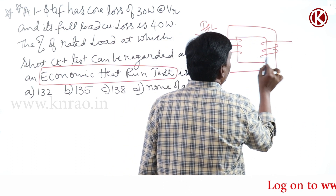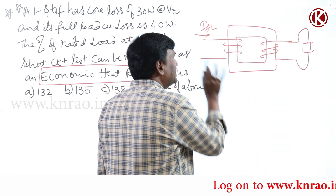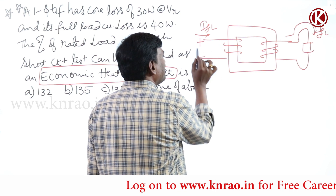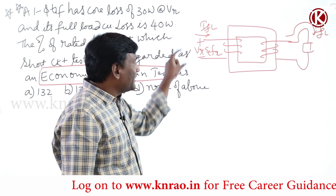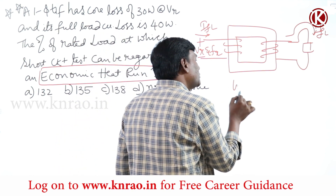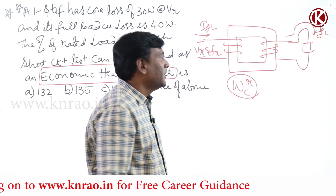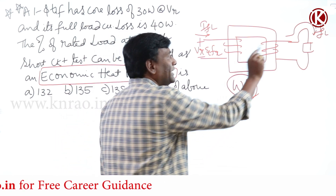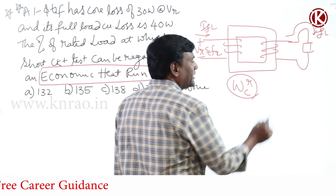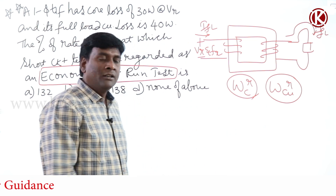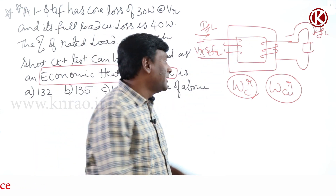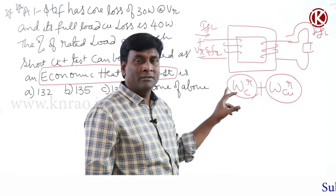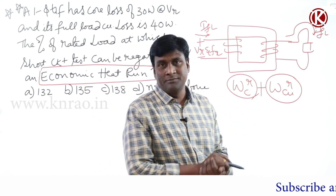In a practical transformer operating at full load conditions, if I supply rated voltage and rated frequency, core losses are going to be rated. If I connect my rated load, rated current will flow — my copper winding will be fully utilized. So rated current flows, copper losses are also rated. Temperature rise in a practical transformer is decided by both core loss and copper loss combined.